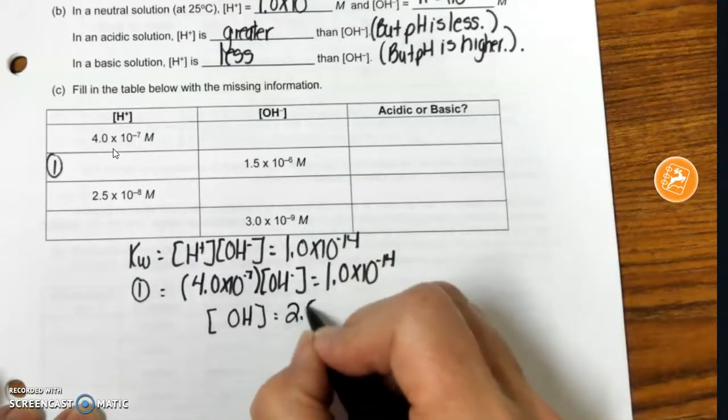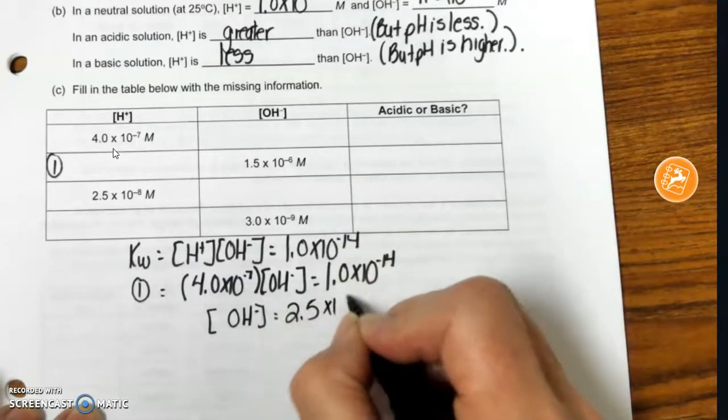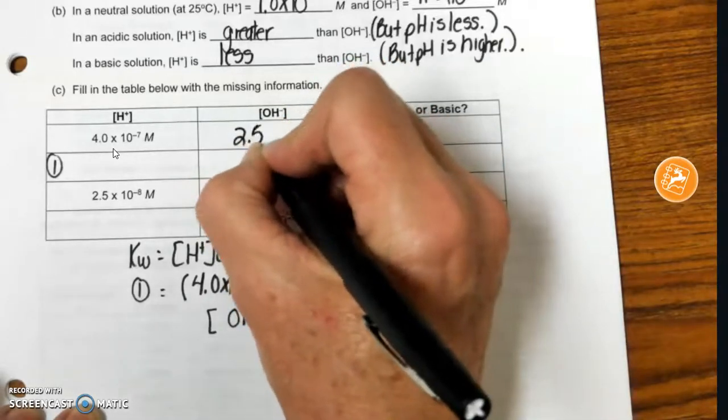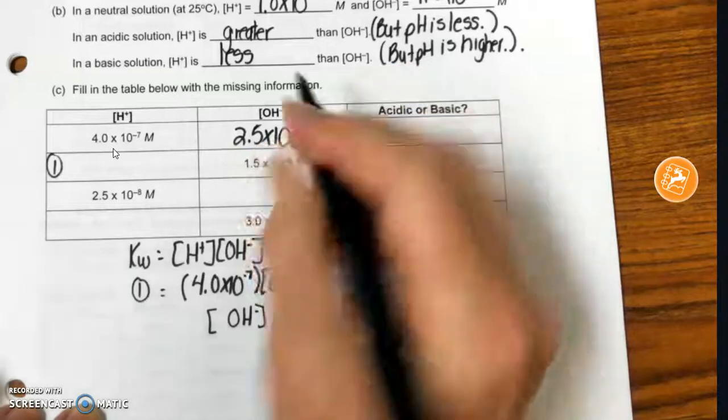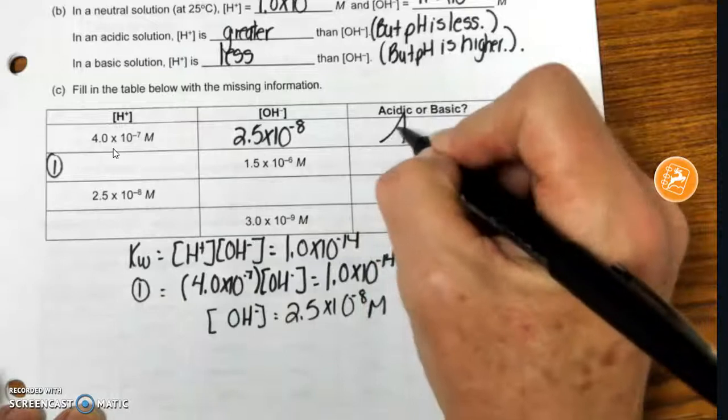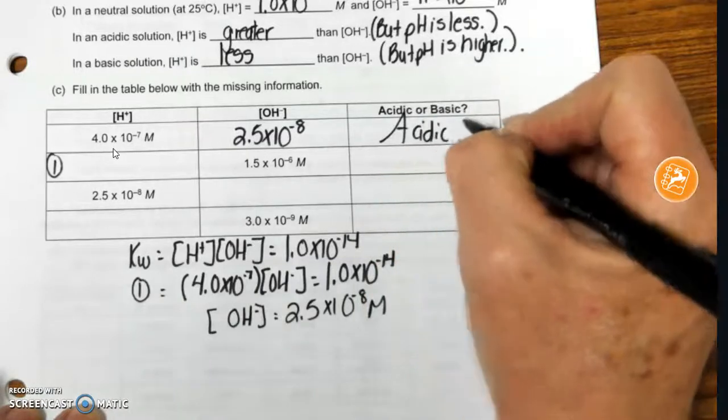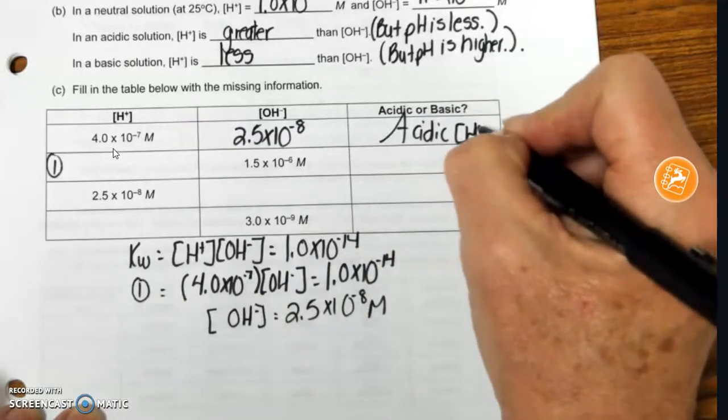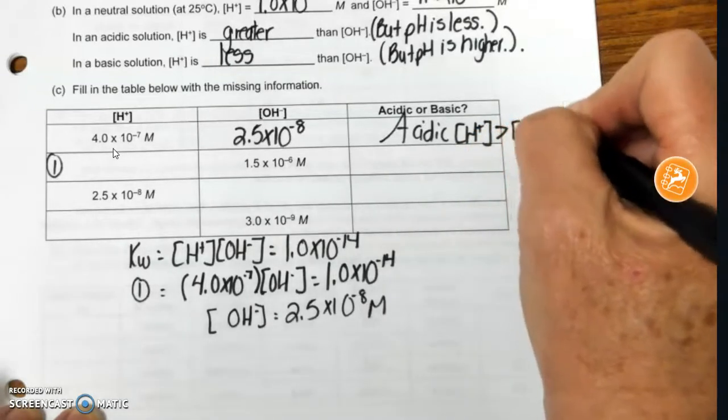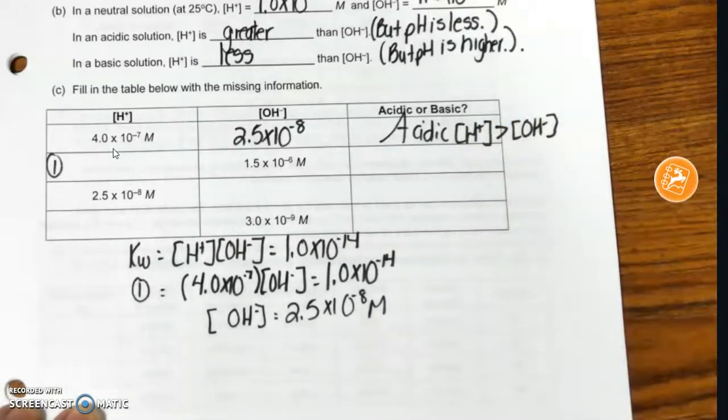I get 2.5 times 10 to the minus 8 molar. So I'm going to put that here. So all I have to do is look at my concentrations. This concentration is higher. Therefore, solution is acidic. I'm going to put here H concentration of hydrogen ion is greater than OH minus.